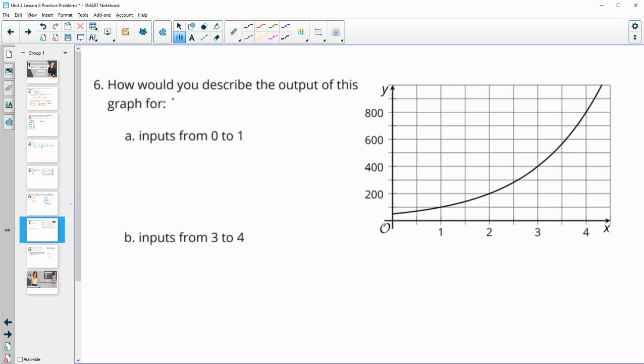Number six, how would you describe the output for the inputs between zero and one? So these outputs are here. Between this number and this number. So it looks like maybe between like 25 and 50, but I don't know this one exactly. So I'm just going to say that the Y values are going to be between zero and 100.